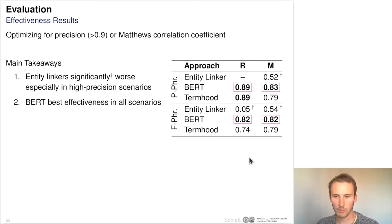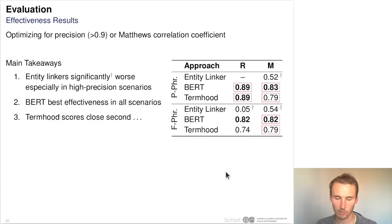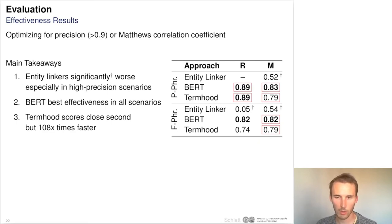The BERT-based approaches performed best in all scenarios — whether optimizing for high precision or Matthews Correlation Coefficient, and across all datasets. However, the termode scores were a close second, achieving the same recall at high precision on the high-precision subset and falling only slightly behind on Matthews Correlation Coefficient. They fell a bit further behind on the full phrase dataset when optimizing for precision, but this result was not statistically significant. Importantly, the termode scores are 108 times faster than the BERT-based approaches, making them the only approach truly applicable at large scale and to web-scale data.